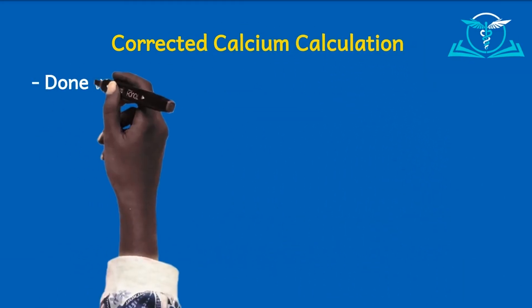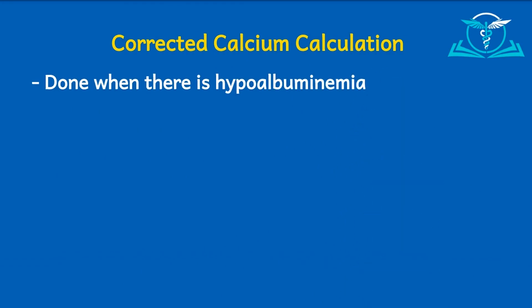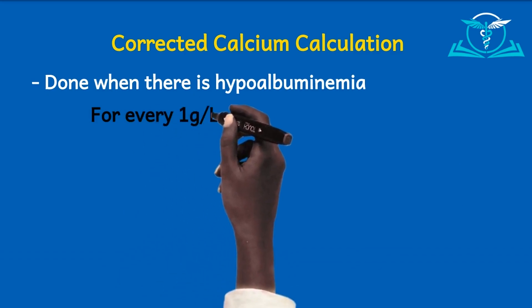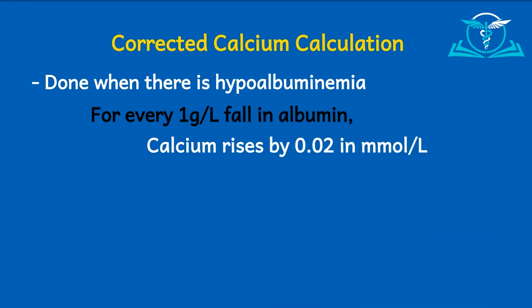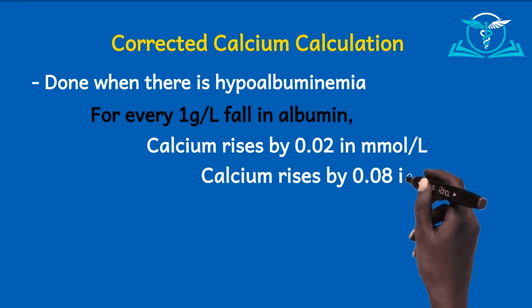Let's see how to calculate the corrected calcium concentration. This is usually done when there is hypoalbuminemia, because hypoalbuminemia can cause a falsely low total serum calcium concentration. Here is the rule — a very popular formula used in clinical practice: for every 1 gram per liter fall in serum albumin levels, calcium should rise by 0.02 millimoles per liter, or by 0.08 milligrams per deciliter.